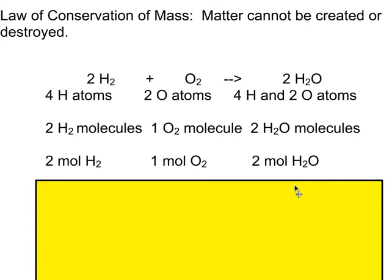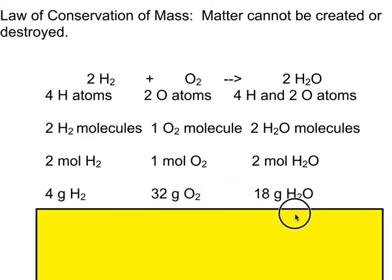Since we're never going to actually sit and count out molecules, we can talk about how many moles are involved in the reaction. So we'd say two moles of hydrogen need one mole of oxygen and would make two moles of water. Here we're just clumping a large number of molecules together and talking about moles. However, we have no way in the lab of measuring out moles — we have to measure in grams.